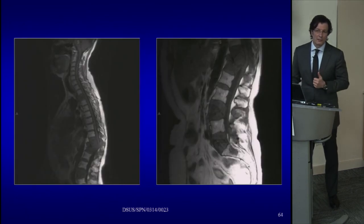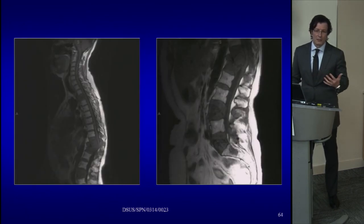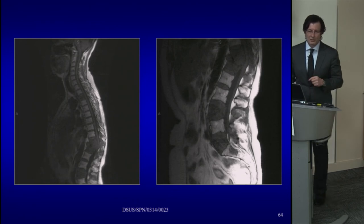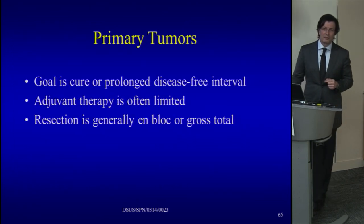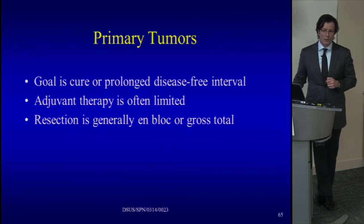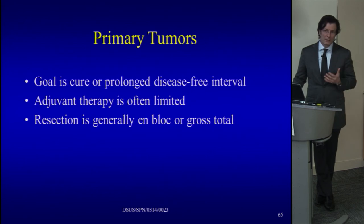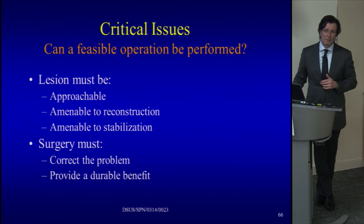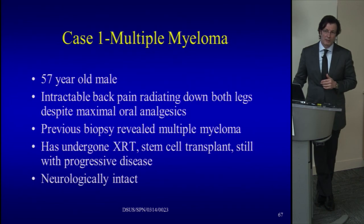In summary, metastatic tumors: the goal is palliation — unlike primary bone tumors where the goal is curative or long-term prognosis. Adjuvant therapies may be available and resection is generally intralesional. These are three very important and very different points compared to primary bone tumor management. With multiple metastases, you may do nothing, whereas with primary tumors the goal is cure, adjuvant therapy is limited, and resection if possible is en bloc.